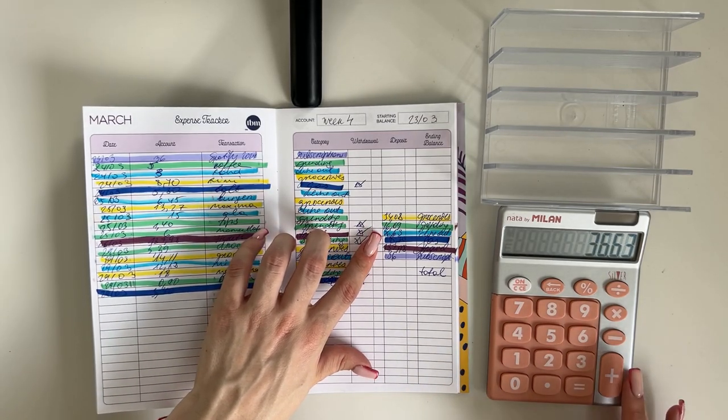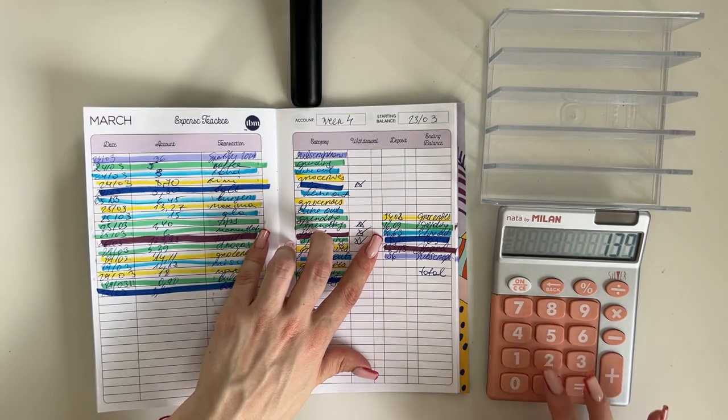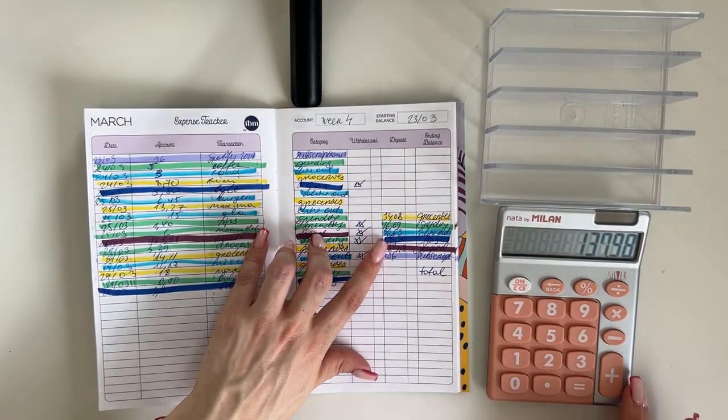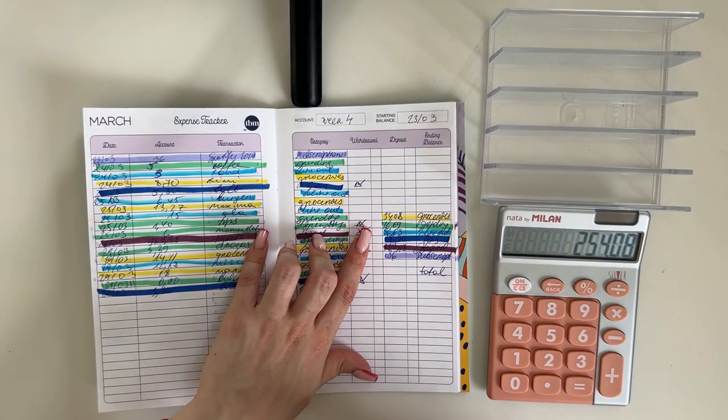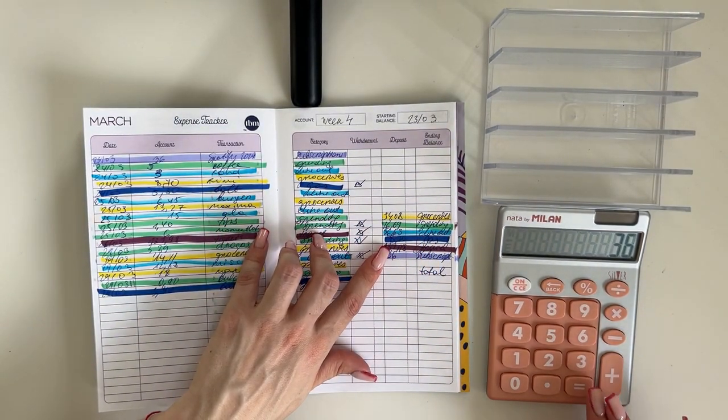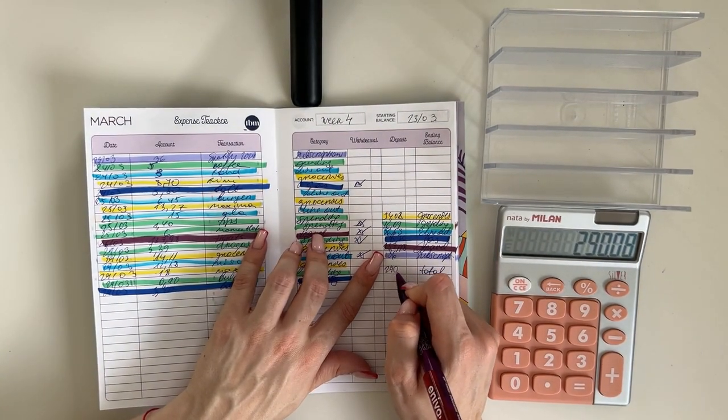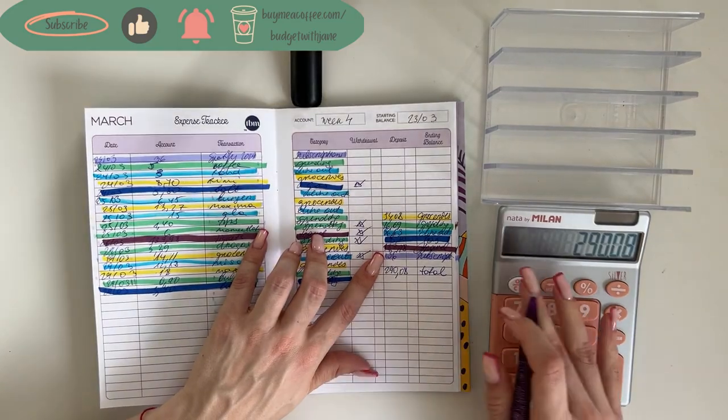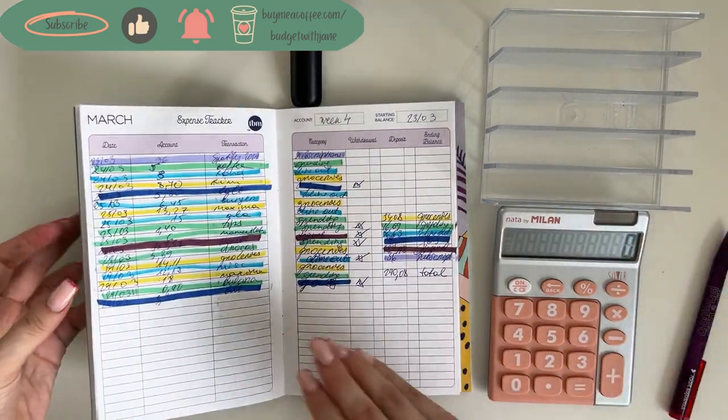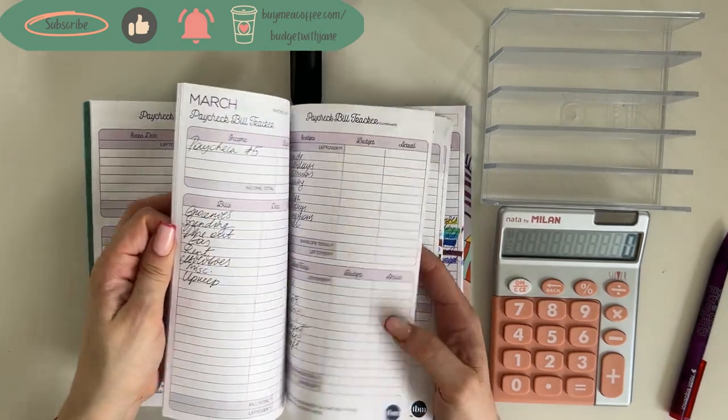36.63 for dine out, 8.70 for gas, 137.98 for travel. I did buy tickets to another trip I'm taking in September so that's happening. And then 36 in subscriptions for my Spotify membership. In total that was 290 euros and 8 cents, so a lower spending week.